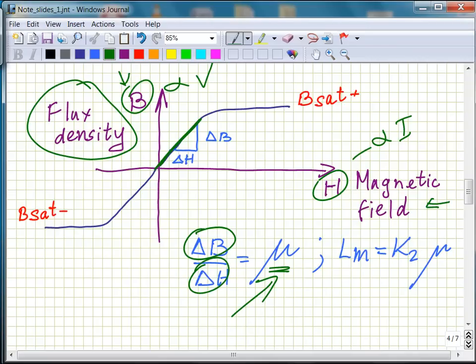Now, the magnetization inductance we talked about is related to this permeability by some constant. This constant includes information like the area cross section of the core and some other parameters.